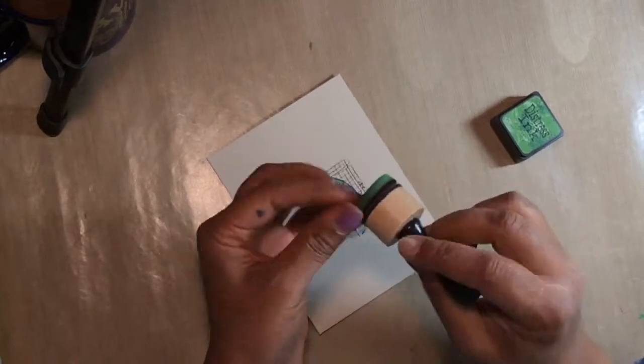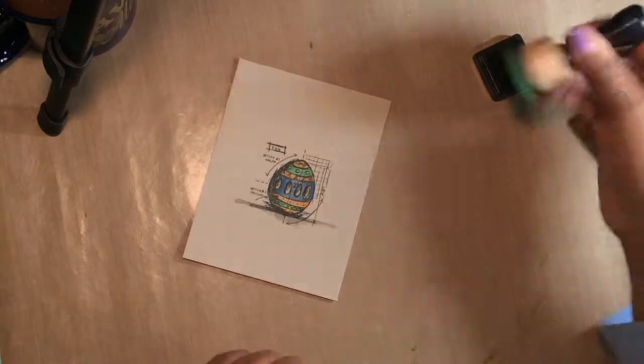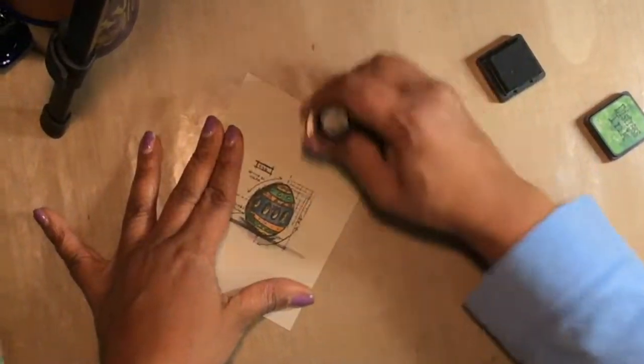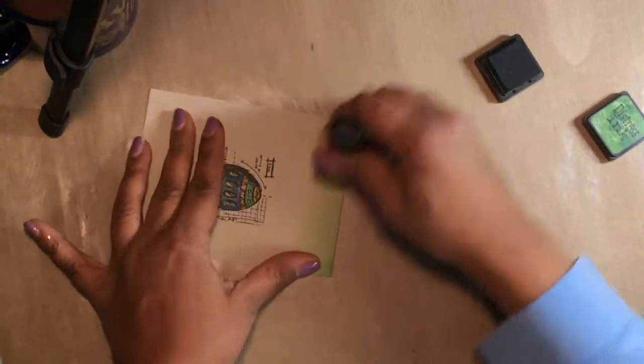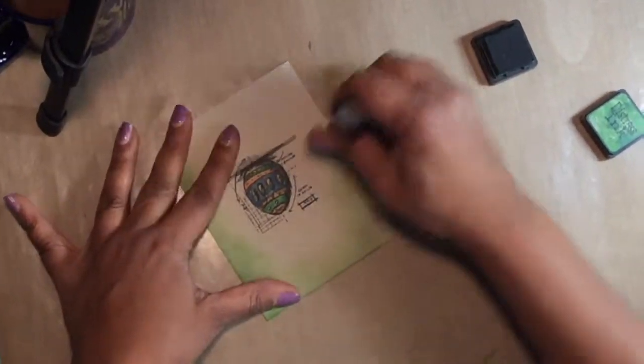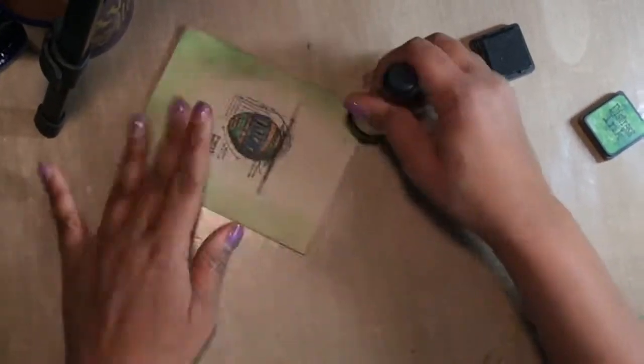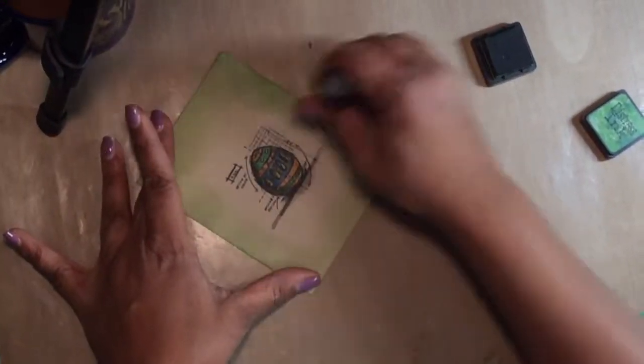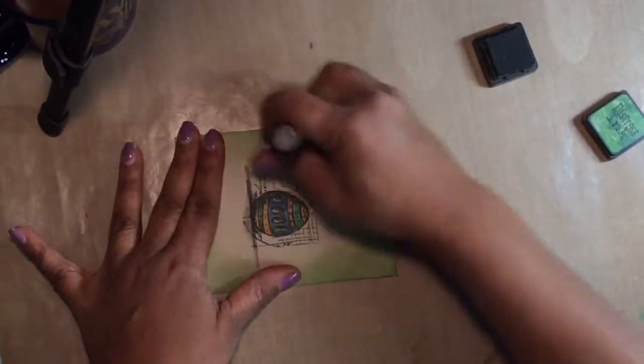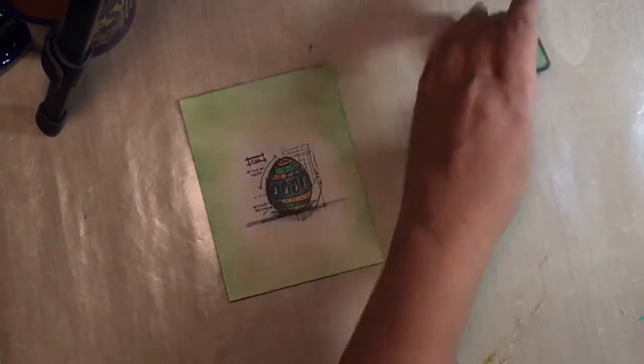Now I'm going to apply some background color by using the Tim Holtz Distress Ink. I'm using the Mowed Lawn color. It's a nice vibrant green. It reminds me of the grass that we put in the Easter baskets. And I'm going to leave a little highlight around the egg. I'm just smoothing it out, making sure that the top is darker than the bottom. And just work it until it's the desired color that I want, making sure there's no major splotches in there.